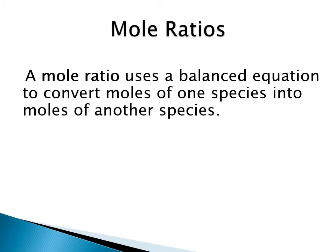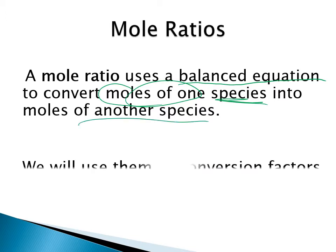That's essentially how we're going to do stoichiometry, but with actual chemical reactions. First, let's look at the mole ratios we'll see in chemical reactions. The mole ratio uses the balanced chemical equation — you have to make sure your equation is balanced — to convert moles of one species to moles of another. We use the balanced equation's coefficients as conversion factors.